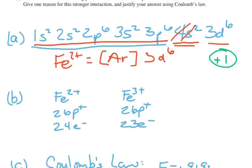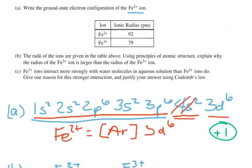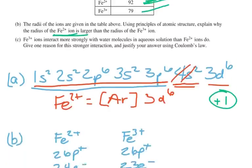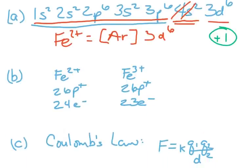The next thing is to explain the idea that Fe2+ is 92 picometers in the radius, and the 3+ is only 79. So the radius that are given in the table, use the principles of atomic structure, explain why the radius of Fe2+ is larger. Why is this guy larger?